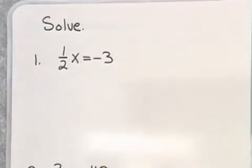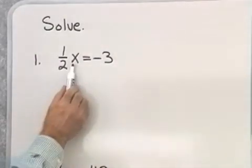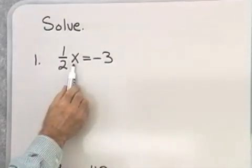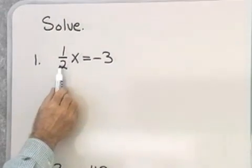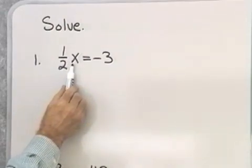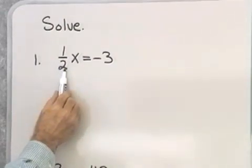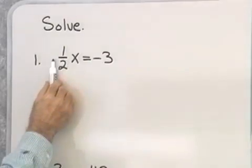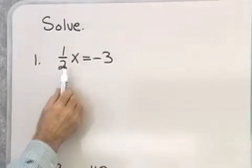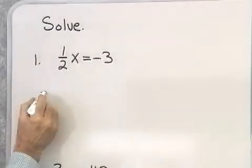I have 1/2 x is equal to negative 3. I want to isolate x on the left side, just like I was doing in the previous lesson. But this time I have 1/2 times x, and what I want is 1 times x. So instead of adding the opposite, what I'm going to do is multiply by the reciprocal.